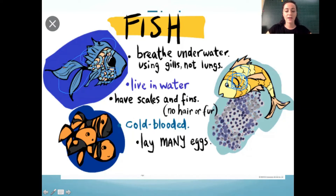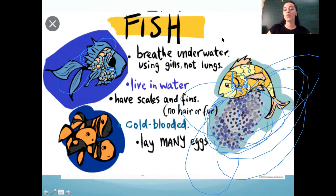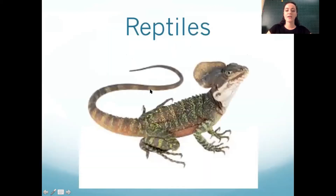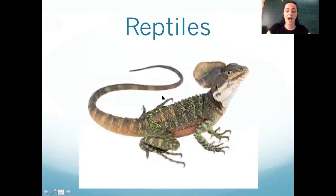Fish are cold-blooded and lay a lot of eggs in the water. The next one is reptiles. Reptiles and amphibians are easy to mix up.